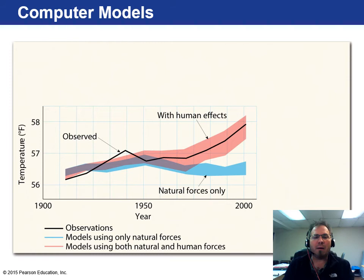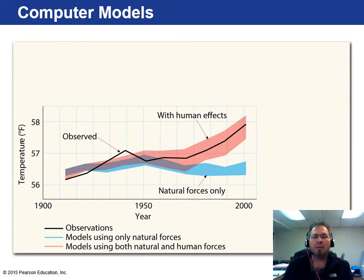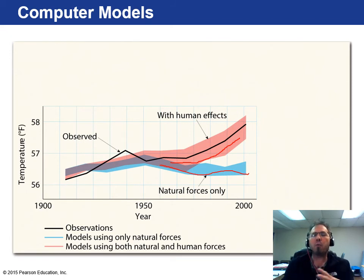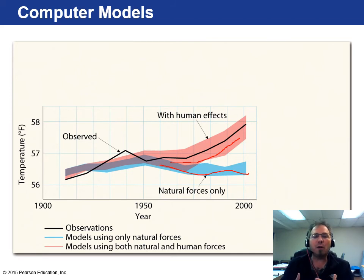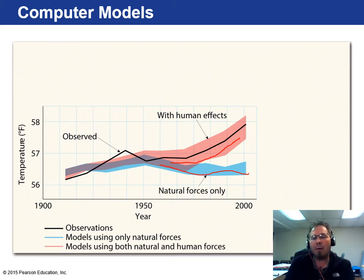Looking at computer model results: if we look at just the observations, there's a trend in temperature going all the way back to the early 1900s, trending upward along the timeline. If we look at just natural forces, it should level out — if you took away all human influences, the Earth would correct itself and things would even out over time. However, when you include models with both natural and human forces, they mimic the observations we're getting now. Things like CO2 emissions, nitrous oxide, and chlorofluorocarbons — when you add those into the model along with temperature and rainfall — the models start to mimic the same upward trend. This is what leads scientists to believe that humans are having a hand in changing global climate.